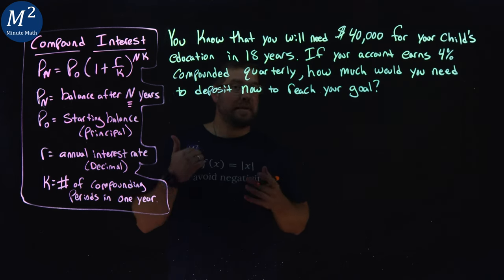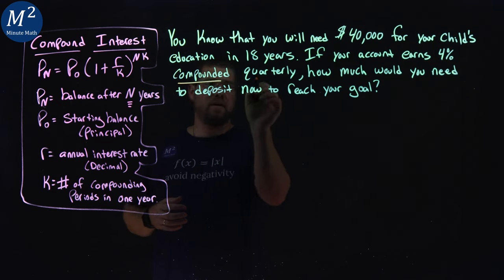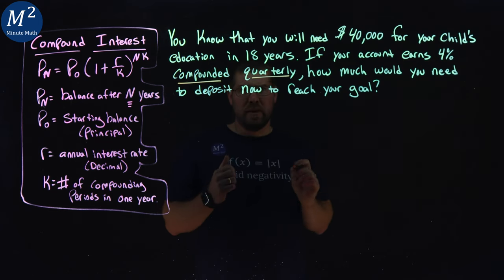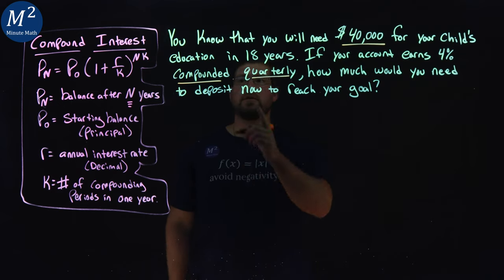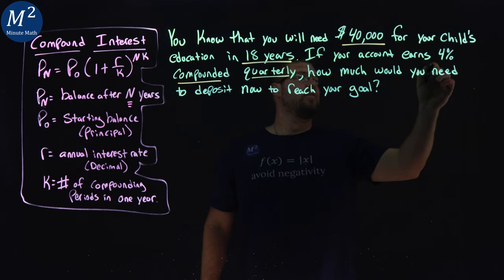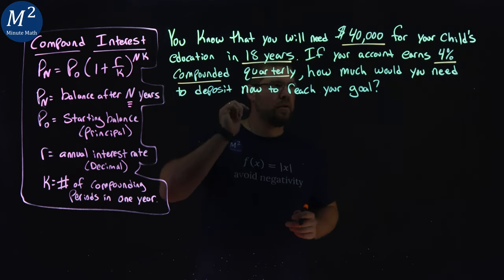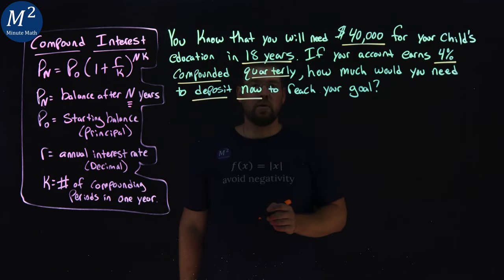We're dealing with compound interest. They tell us here it's compounded quarterly, and that's actually one of the key parts. Let's get some other key parts here. We will need $40,000 for our child's education in 18 years. Our account earns 4% compounded quarterly. How much you need to deposit now to reach your goal?